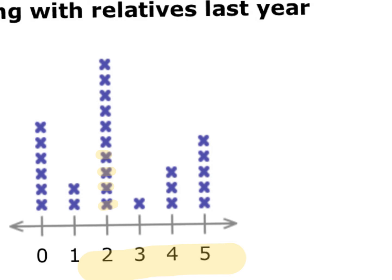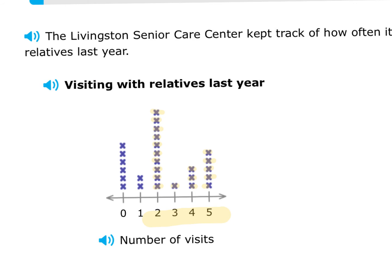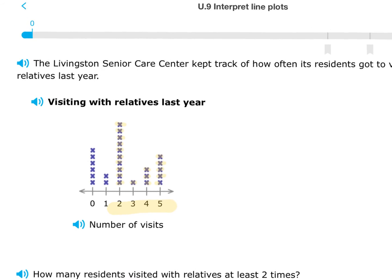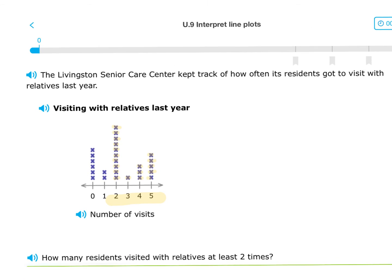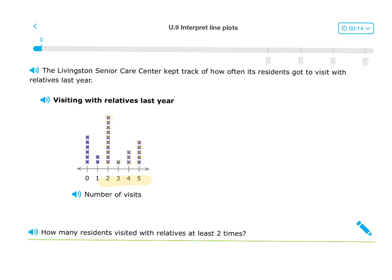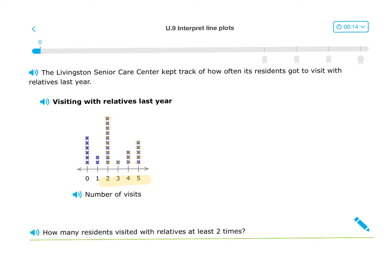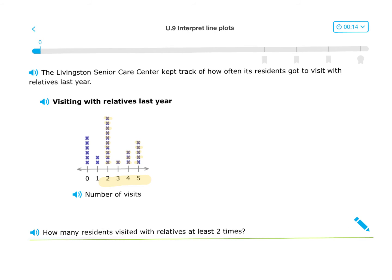Counting each X: one, two, three, four, five, six, seven, eight, nine, ten, twelve, thirteen, fourteen, fifteen, sixteen, seventeen, eighteen, nineteen. And you find your answer that way. So just a little heads up — a screenshot will help you on this one.